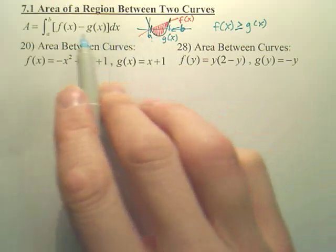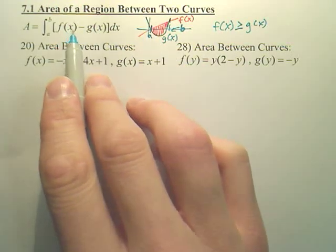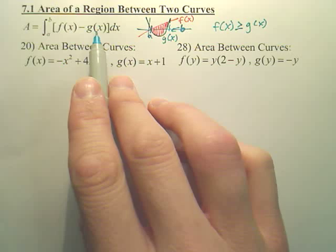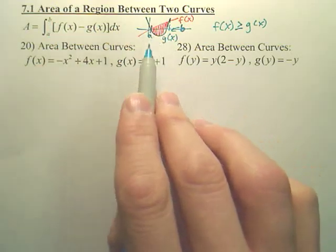Depending on the graph, it depends on which one's f, which one's g. f means the bigger one, g means the lower one. You integrate it and that will give you the area between two curves.